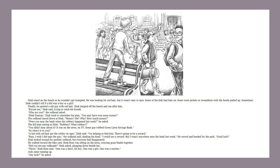Dink looked around for another redhead, but everyone had disappeared. He walked toward the bike rack. Ruth Rose was sitting on the lawn, weaving grass blades together. Did you see any redheads? Dink asked, plopping down next to her. Three, Ruth Rose said. One was a short, fat boy. One was a girl. And one was a teacher. Josh came running up. Any luck? he asked.